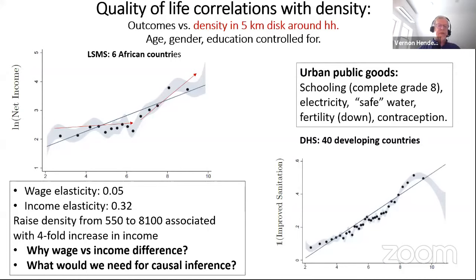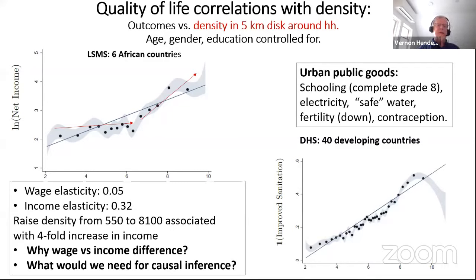The wage-income difference may reflect more hours worked, greater diversity of occupations in the family, and greater labor force participation. These aren't causal relationships — we've controlled for age, gender, and education, but we're not really dealing with sorting, which is potentially an issue. Even so, you see with the same education these huge differences in wages and income. Urban public goods also improve: schooling completion of grade 8, electricity connection, safe water, lower fertility, modern contraception, and improved sanitation all rise with density.